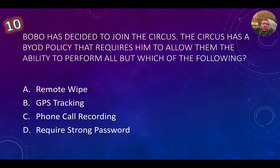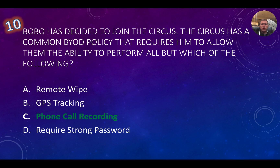Our last question, number ten: Bobo has decided to join the circus, and the circus has a BYOD policy requiring them to allow the ability to perform all but which of the following? Hopefully you chose phone call recording. Remote wipe and GPS tracking are definitely very common with BYOD policies, and requiring a strong password is also commonly implemented. Phone call recording is not typically seen in any BYOD policy — we still want to maintain employee privacy for telephone conversations. The correct answer is C.